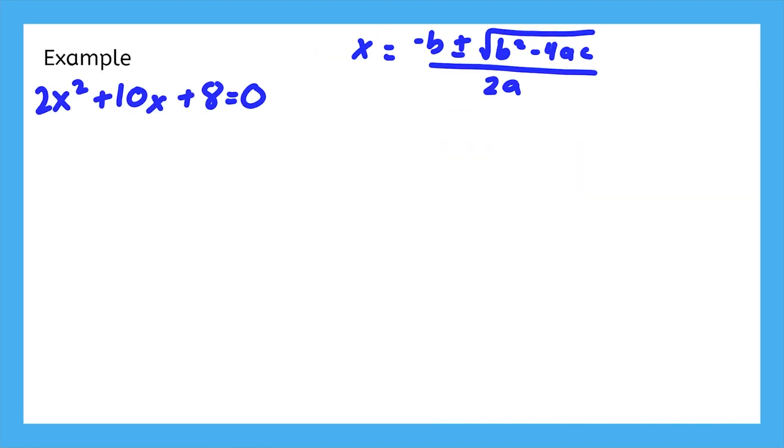Let's try an easy example. The quadratic formula requires us to identify three things: a, b, and c. Now we plug those in. The b's are 10. The a's are 2. And c is 8.